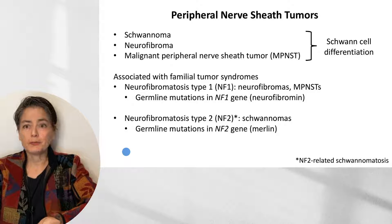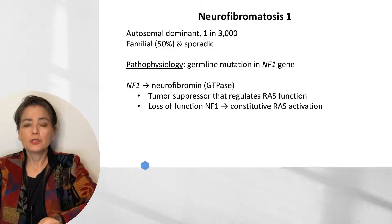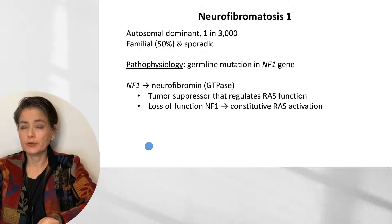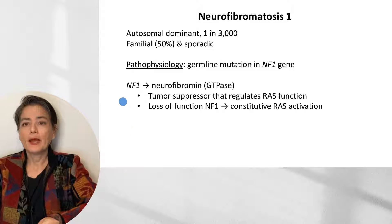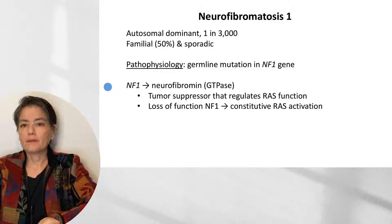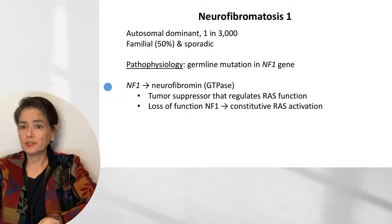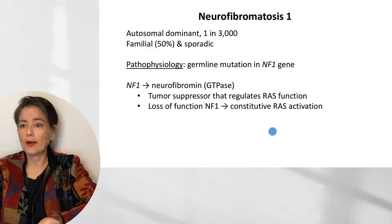NF2 is due to germline mutations in the NF2 gene, which encodes the protein Merlin. Neurofibromatosis type 1 is an autosomal dominant disease with complete penetrance, affecting about 1 in 3,000 individuals. About half of cases are familial and half are sporadic, due to germline mutations in the NF1 gene. NF1 encodes the protein neurofibromin, which is a GTPase. It is a tumor suppressor that regulates RAS function, and when we lose NF1 function, we get constitutive RAS activation with downstream signaling.